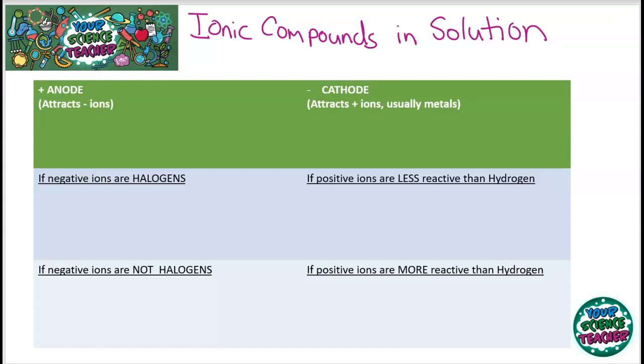As we said, the anode attracts negative ions. And if the negative ions are halogens, then it will always be formed at the anode. For example, Cl-, F-, Br-. These are all ions that would be formed at the anode. However, if you don't have a halogen, for example you have a sulfate or carbonate, then you do not form that ion. Instead, you'll produce oxygen at the anode. So the only ones that get formed in solution are halogens.